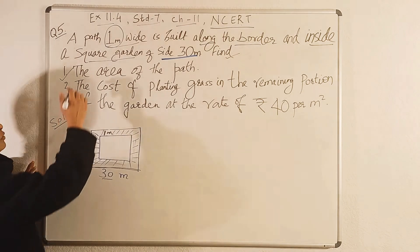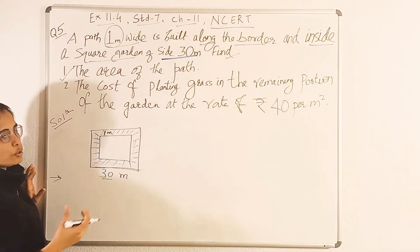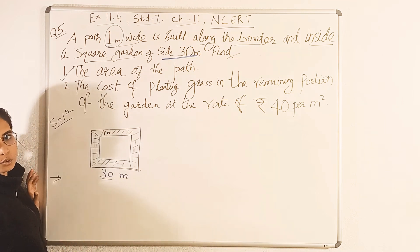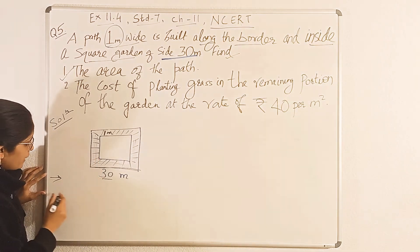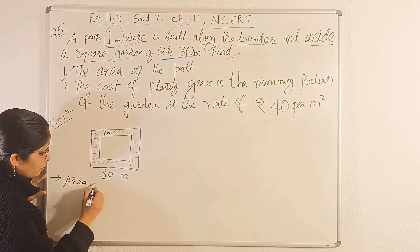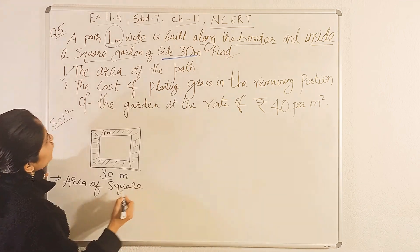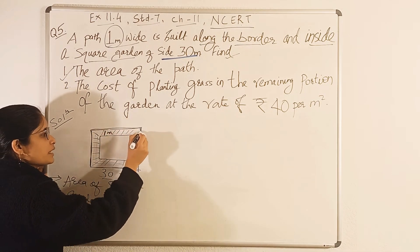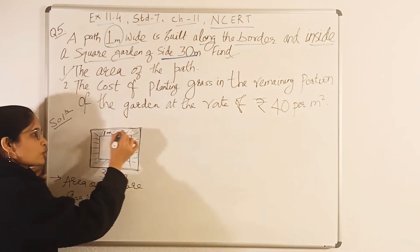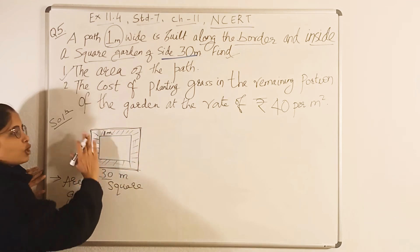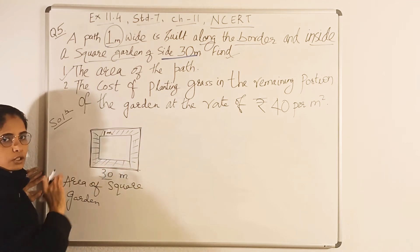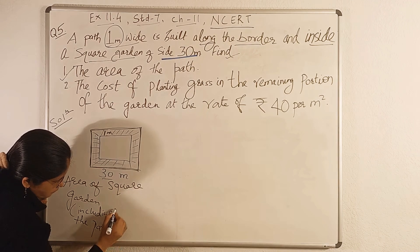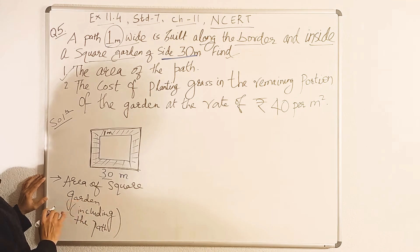For finding the area of the path, first we will find out the area of the square garden. The formula for area of a square is side × side, or side squared. When we find the area of the square garden, we are talking about this exterior boundary — including the path. So, area of square garden (including the path) = side² = 30² = 900 meter square.